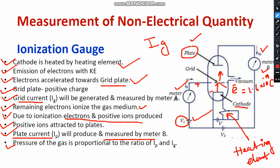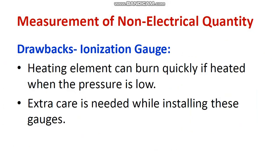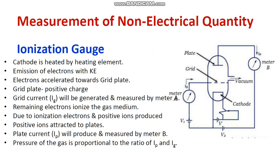The pressure of the gas is proportional to the ratio of ip to ig. Therefore, the pressure applied can be directly associated with the ratio of plate current to grid current: pressure ∝ ip / ig. This is the way the ionization gauge operates. To summarize: first, the grid current ig is generated; afterwards, the plate current ip is generated; and finally, pressure is directly proportional to the ratio of ip and ig.